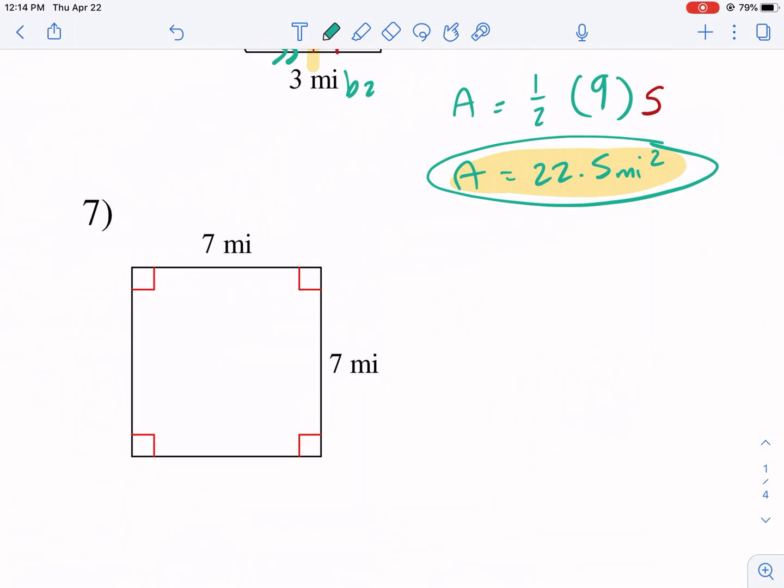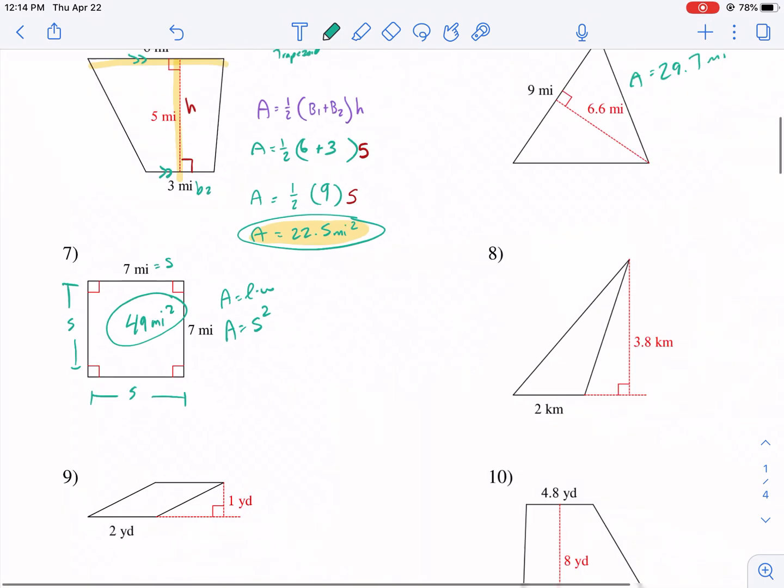This one is a square. So we just do... Actually, there's two formulas for this. Length times width. Or for a square, there's a special one. S squared. Where a side is the length of one of the sides. So S is one of the lengths of the sides. So you just do side squared. 7 times 7. 49 miles squared. And that's going to be our answer there.